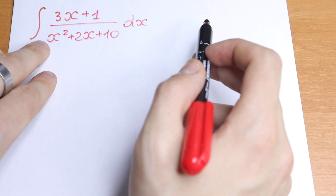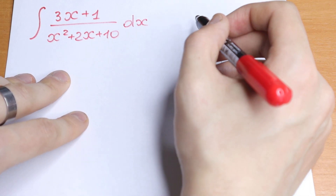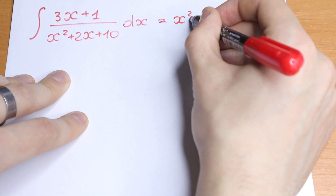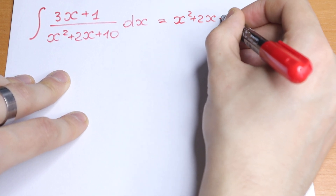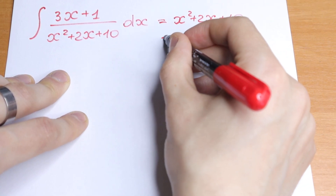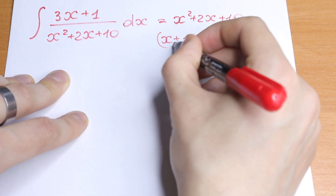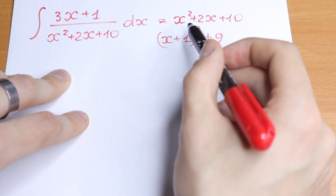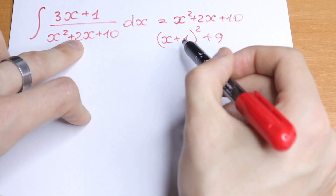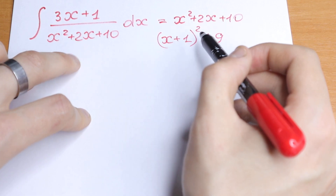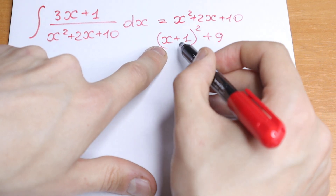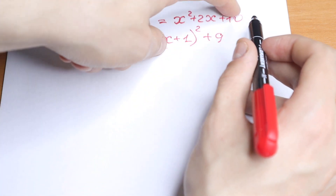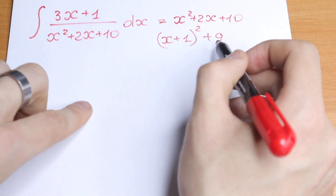Take a look at our denominator. We can write x squared plus 2x plus 10 as (x+1) squared plus 9. We rewrite the denominator as (x+1)² + 9 because if we expand (x+1)² we get a constant of 1, and 1 plus 9 gives us 10 — so we have the same expression.